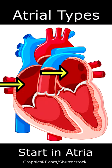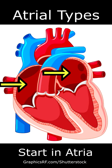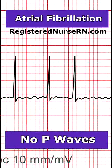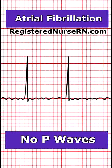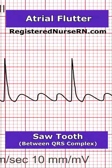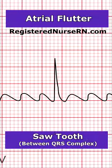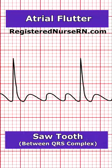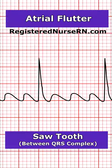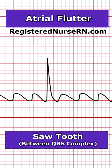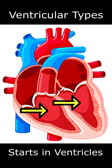Then we have the atrial types, and their electrical signals begin in the top chamber of the heart, the atria. We have atrial fibrillation, and here notice there's no P waves. Then we can have atrial flutter, and notice that sawtooth appearance between the QRS complexes — that's what gives it a different appearance than atrial fibrillation.